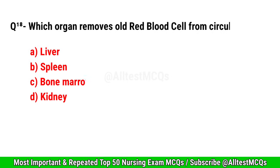Question No. 18. Which organ removes old red blood cells from circulation? Correct option is B. Spleen.